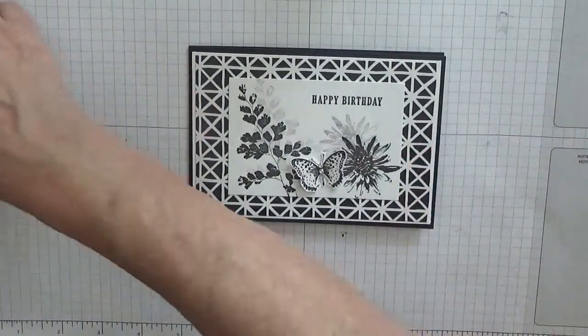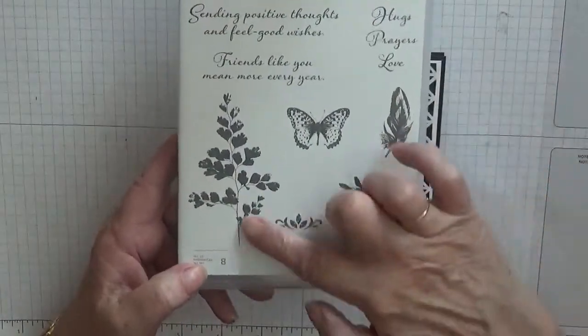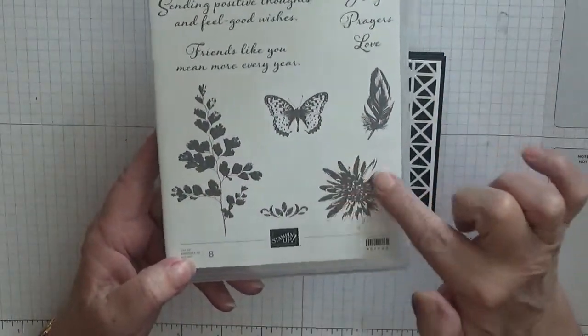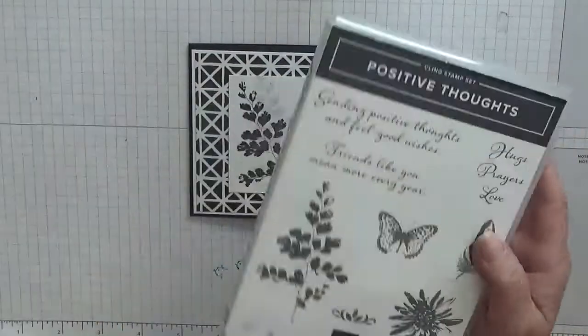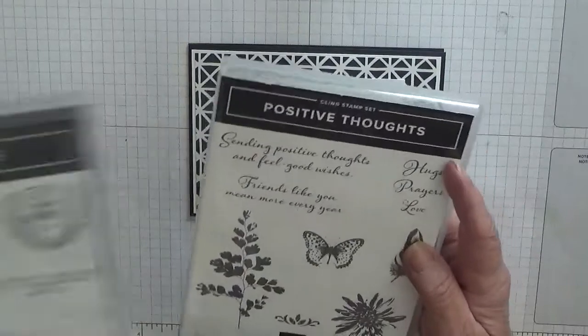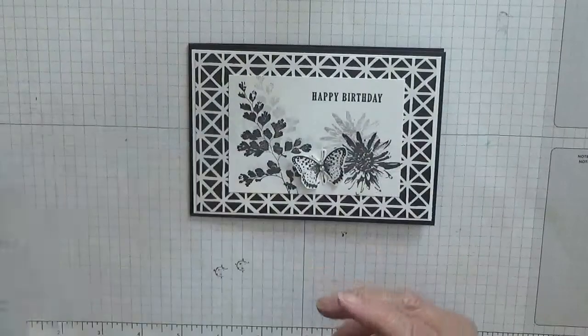To make this card I used the stamp set Positive Thoughts and I've used that leaf, that flower and the butterfly. For the sentiment I've used Happy Birthday and I took that out of Clubhouse.